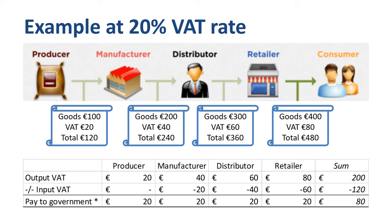The manufacturer has charged 40 euro output VAT to the distributor and has 20 euro input VAT, so pays a net amount of 20 euro to the government. The distributor has 60 euro output VAT and 40 input VAT, so another net 20 to the government. The retailer has 80 euro output VAT and 60 input VAT, for the last net 20 euro VAT going to the government. Four steps of 20 euros VAT each equals a total of 80 euros.